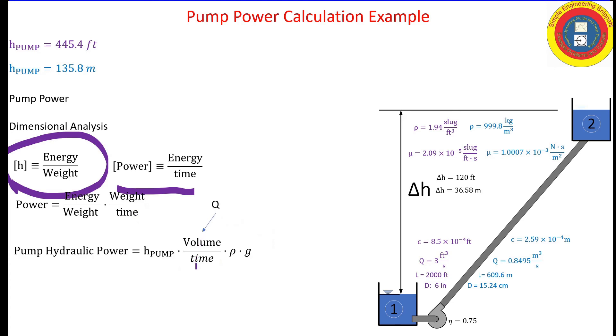It's going to be the volumetric flow rate, which is provided, times the weight density, which we know. So this is my boxed equation for how to obtain the hydraulic power.